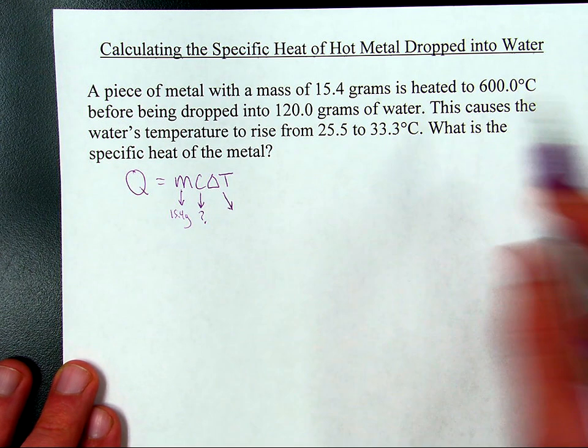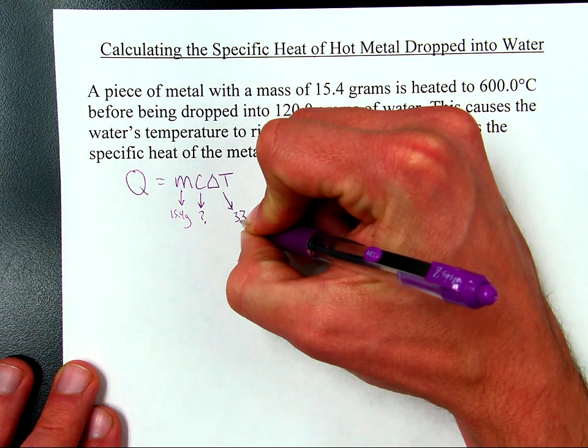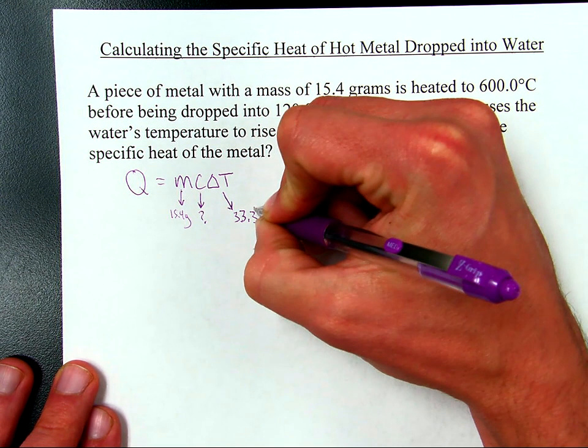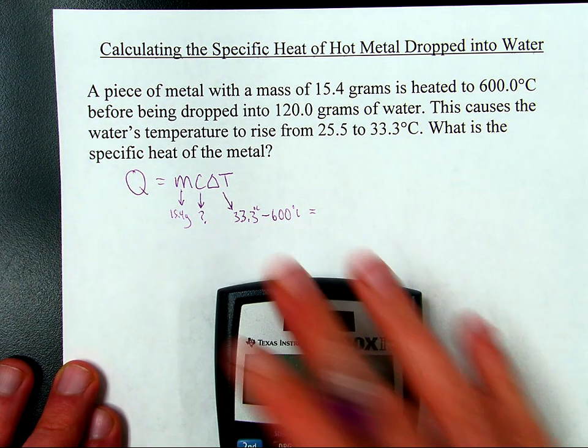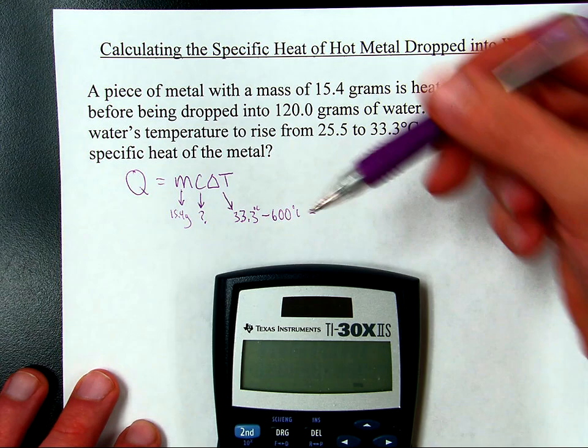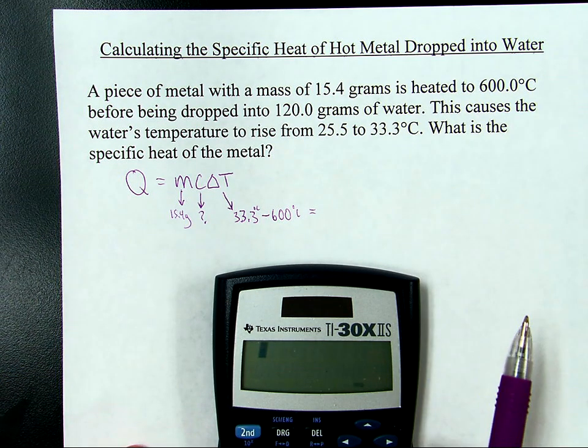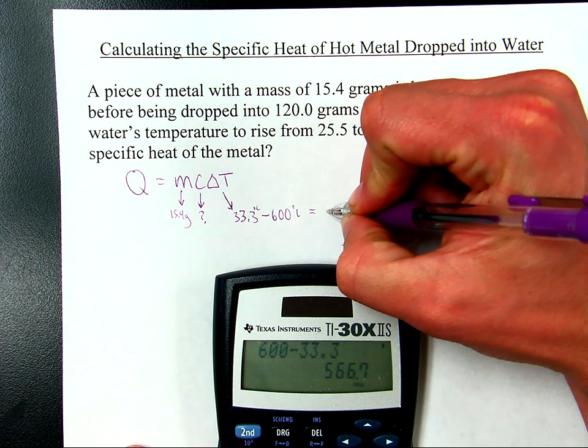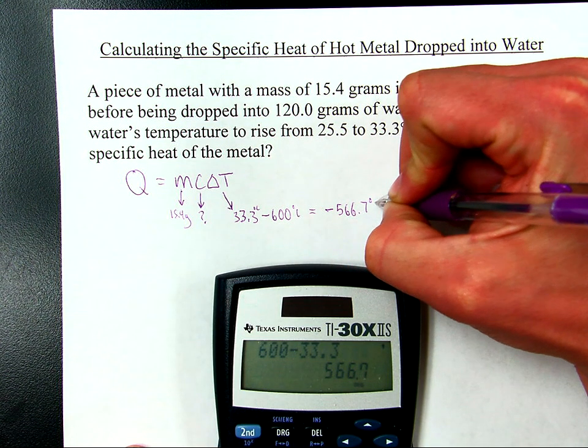The water ends up at 33.3 degrees Celsius, so is the metal. We're going to do it like this, 33.3 degrees minus 600 degrees Celsius will equal the change in temperature. The reason why I'm setting it up this way is because the metal's temperature went down from 600 to 33.3, which means that's a negative delta T, because whenever the temperature drops, the numbers should be negative.